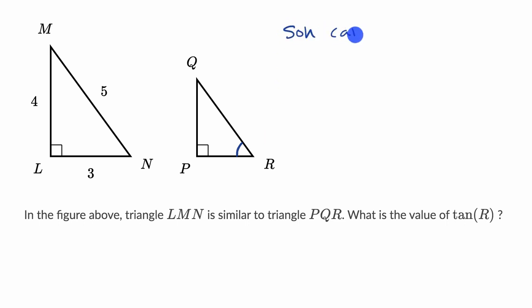You might be familiar with SOHCAHTOA. If you aren't, I encourage you to review all of the trigonometry on Khan Academy, especially the basic right triangle trigonometry. But this tells us that sine is opposite over hypotenuse, cosine is adjacent over hypotenuse, and tangent is opposite over adjacent.